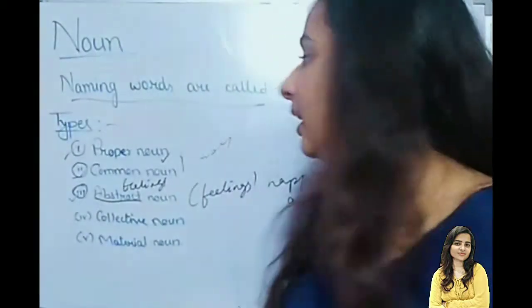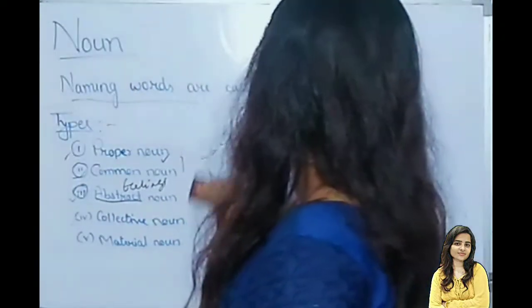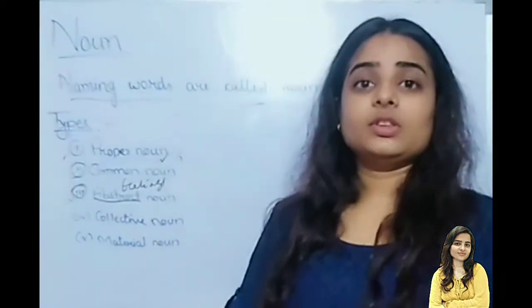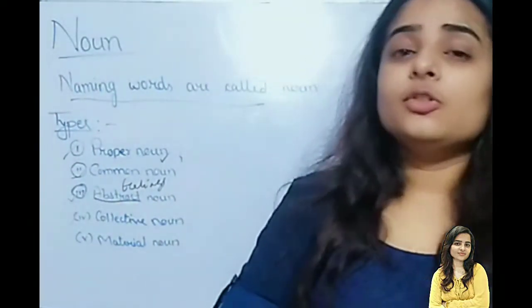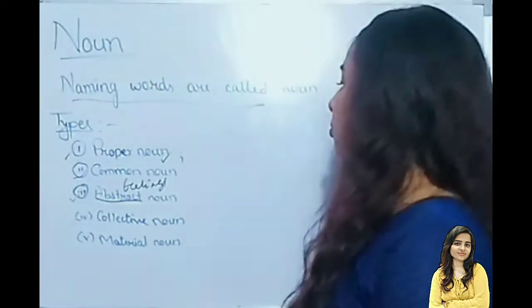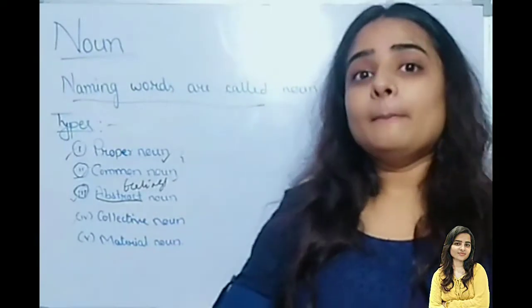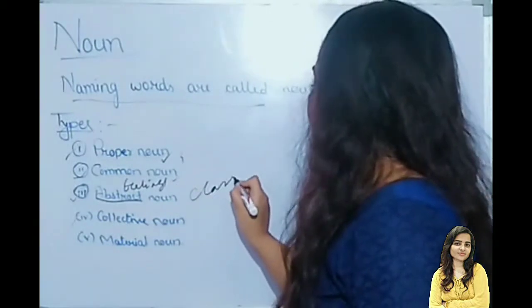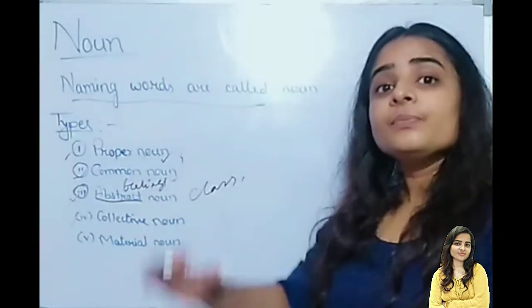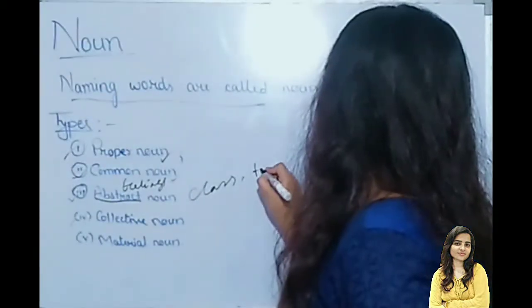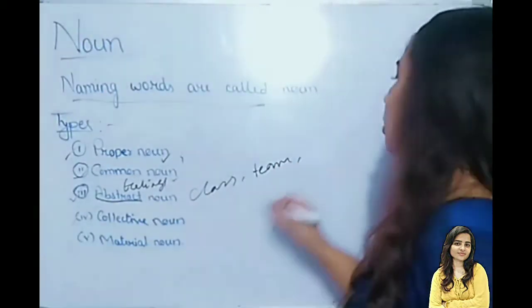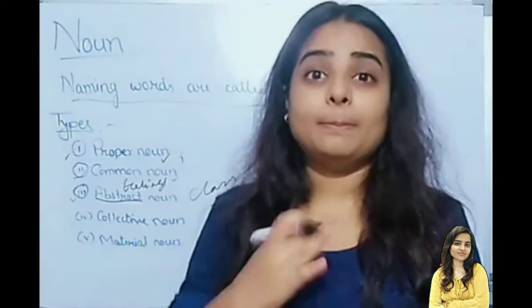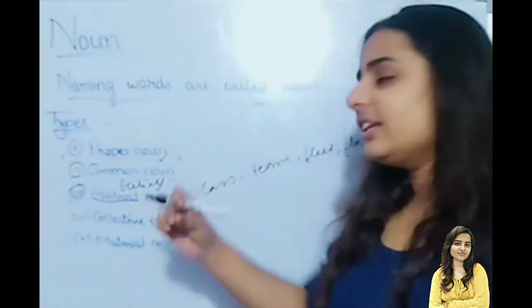Next: Collective Noun. Its meaning is hidden in its name — a group or collection of any thing is a collective noun. For example, one student is a common noun, but a group of students — we would call that a 'class.' Class is a collective noun. Other examples include team, fleet, flock, bundle, bunch — these all come under collective noun.